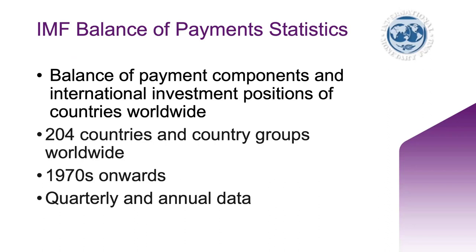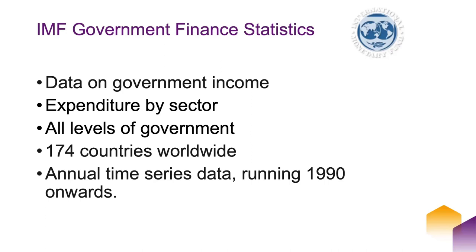The Balance of Payment Statistics is a time series dataset covering the standard balance of payments components and international investment positions of countries. Most countries' data extends back to the 1970s to the present, quarterly and annual. The Government Financial Statistics tells you how government gets its money and how it spends it - covering government income such as tax, aid and debt, and expenditure by sector including defence, education, and health for all levels of government: national, state, and local. There are 174 countries covered with annual data running back to 1990.